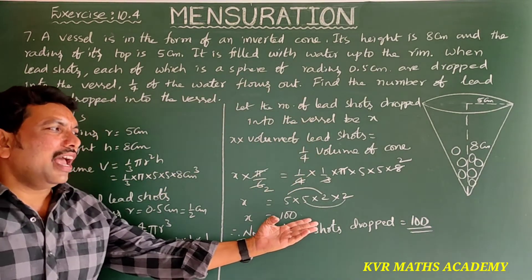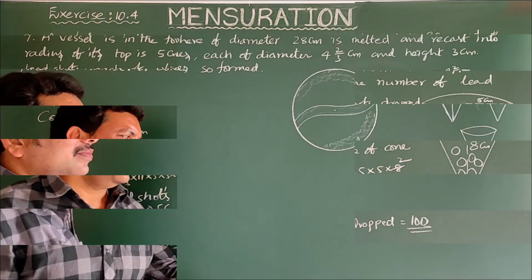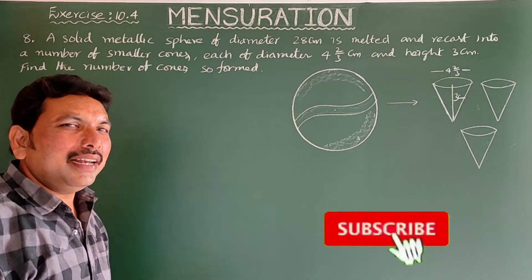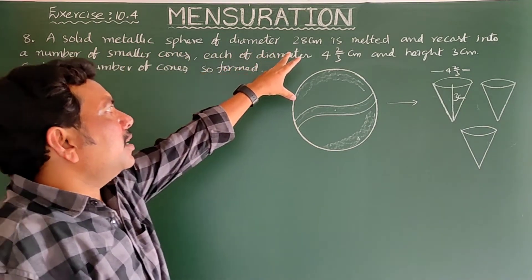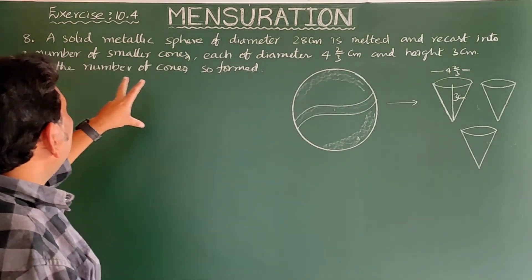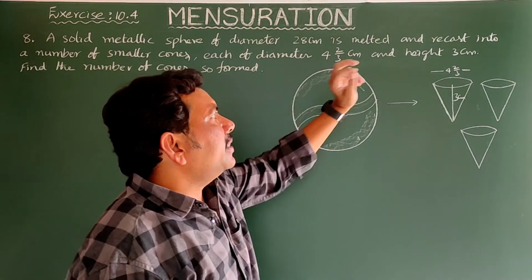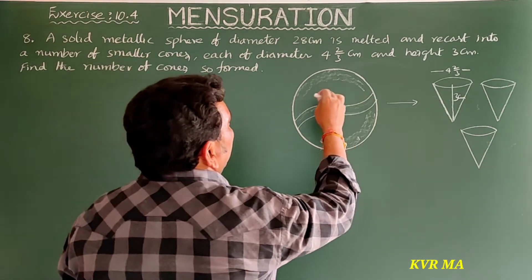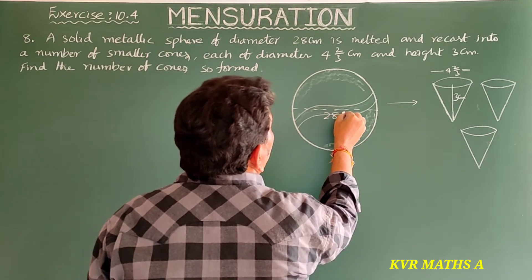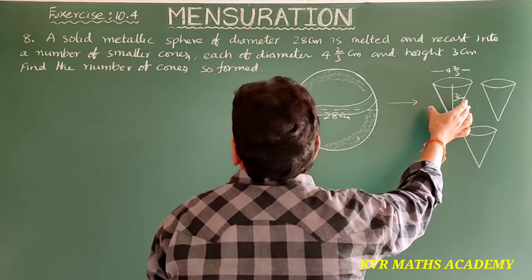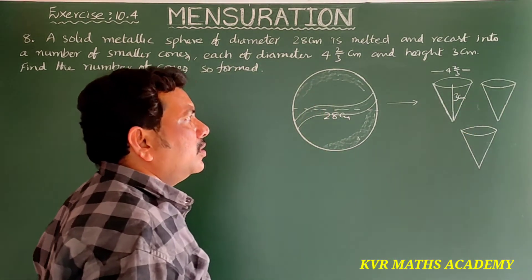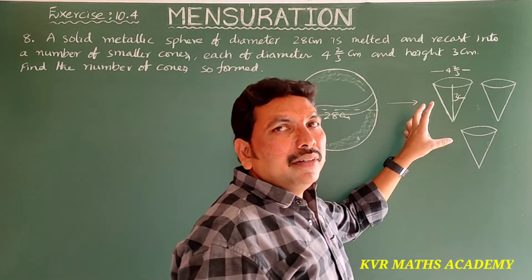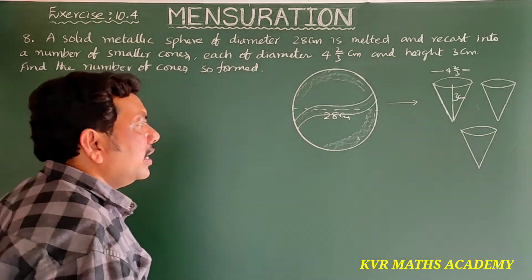Now the eighth question — this is the final problem in this exercise and this chapter. A solid metallic sphere of diameter 28 centimeters is melted and recast into a number of smaller cones, each of diameter 4⅔ centimeters and height 3 centimeters. Find the number of cones so formed.